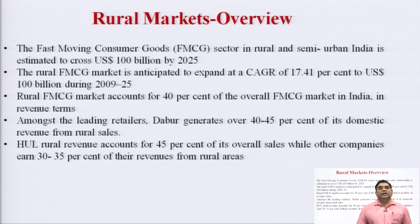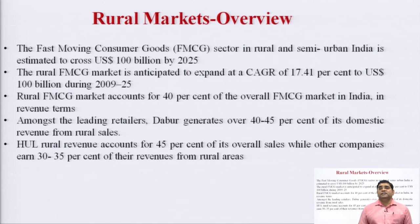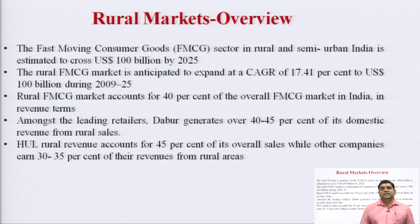Amongst leading retailers, Dabur generates around 40 to 45 percent of its domestic revenue from rural sales. Dabur is a well-known established brand in FMCG products and has tapped the rural market through retailers, wholesalers, dealers, and distributors over a period of time. Similarly, Hindustan Unilever Limited generates around 45 percent of its overall sales from rural areas, while other companies derive 30 to 35 percent of their revenues from rural areas.